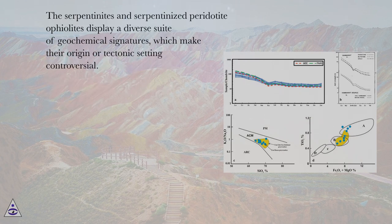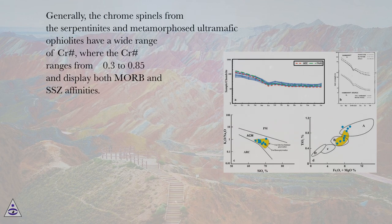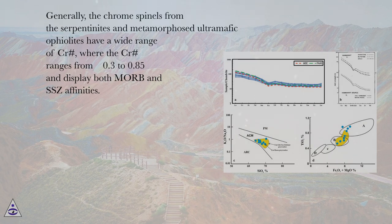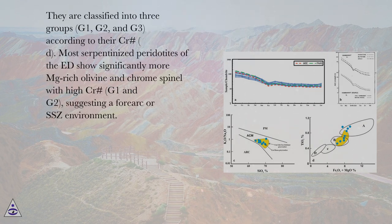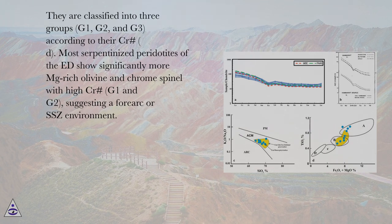The serpentinites and serpentinized peridotite ophiolites display a diverse suite of geochemical signatures, making their origin or tectonic setting controversial. Generally, chrome spinels from serpentinites and metamorphosed ultramafic ophiolites have a wide range of CR#, from 0.3 to 0.85, displaying both MORB and SSZ affinities. They are classified into three groups: G1, G2, and G3. Most serpentinized peridotites of the Eastern Desert show significantly more Mg-rich olivine and chrome spinel with high CR# (G1 and G2), suggesting a forearc or SSZ environment.